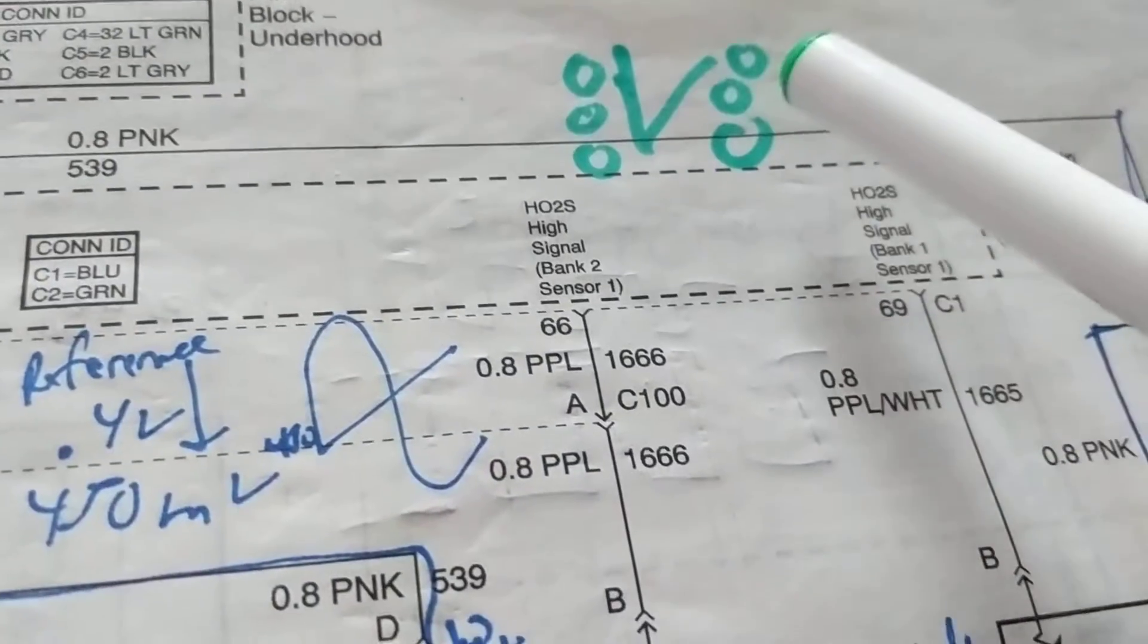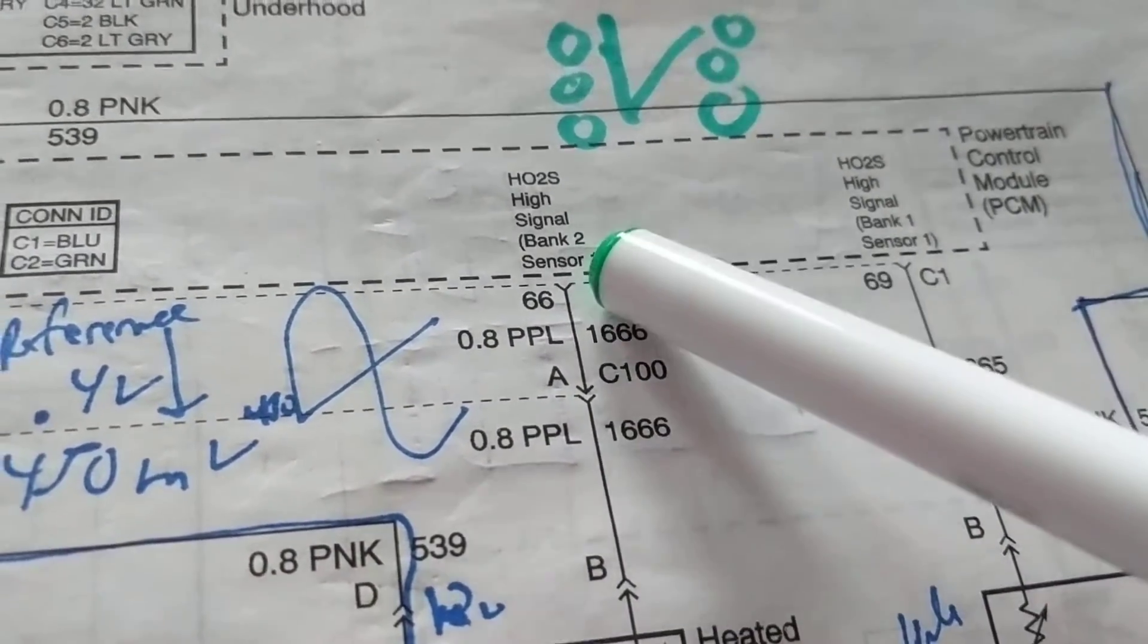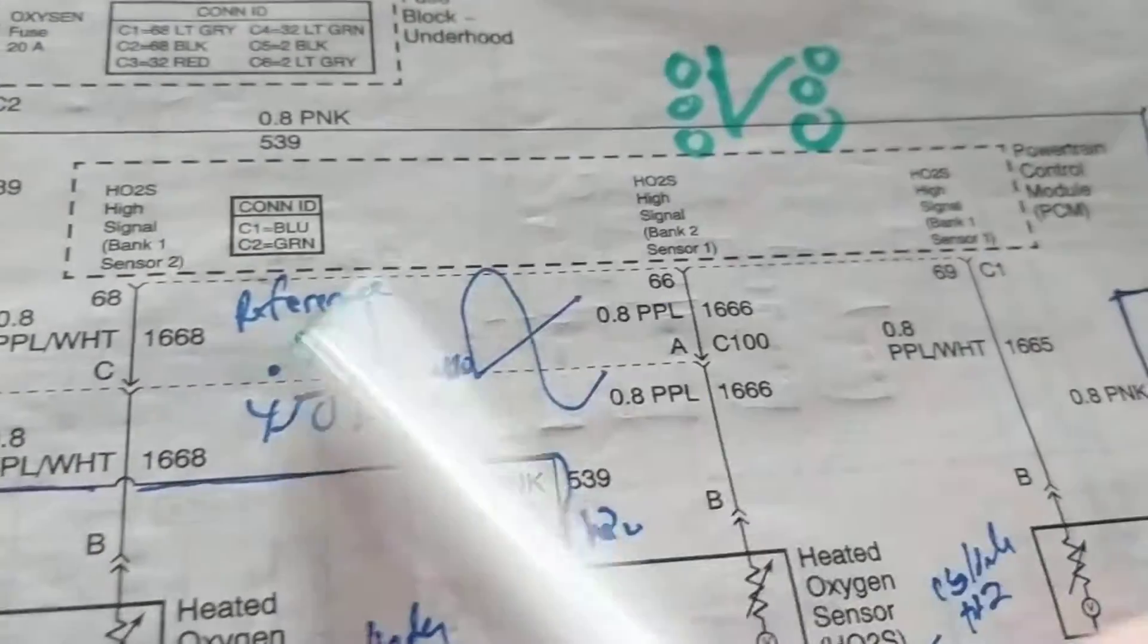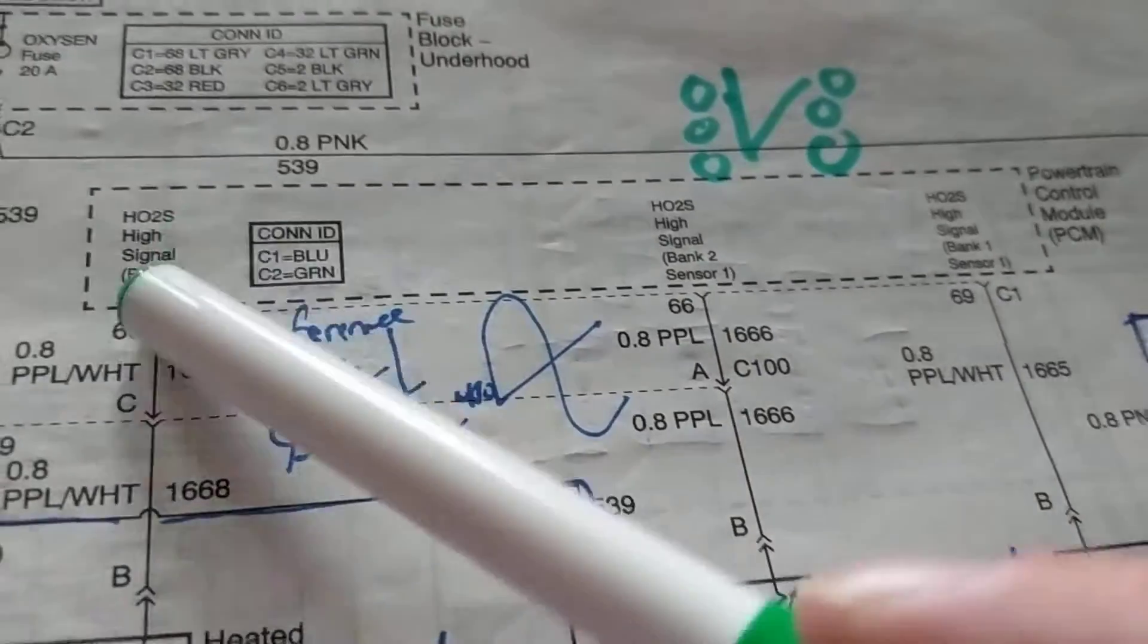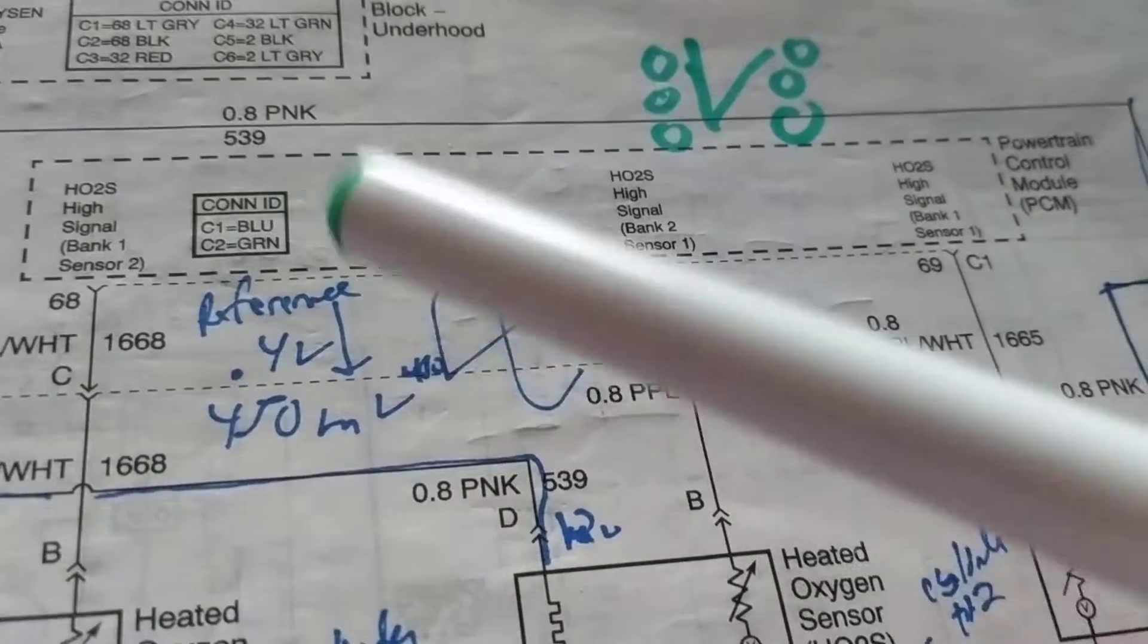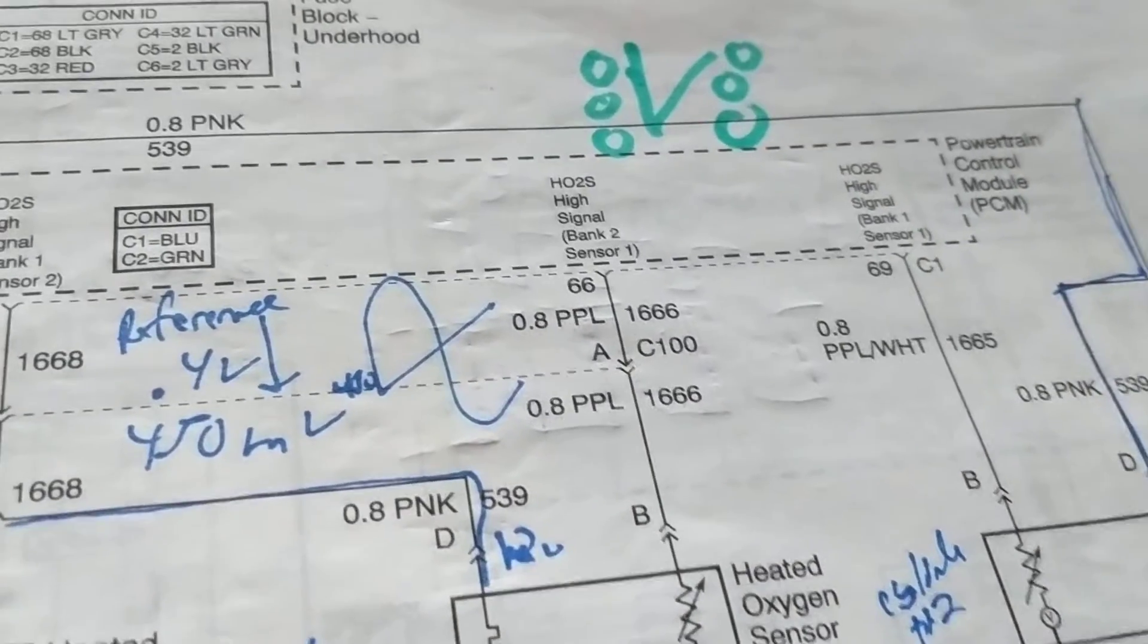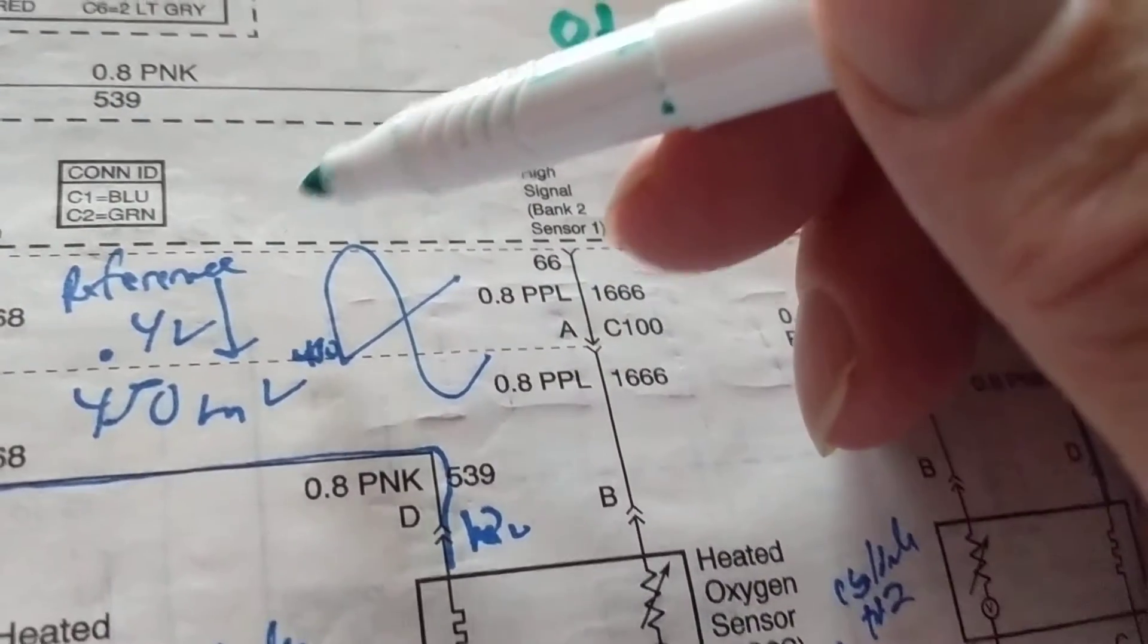This is the feedback line giving information: rich, lean, rich, lean, rich, lean. What we want to see are oscillations. Oscillations means we want to see this oxygen sensor go—those are called oscillations.